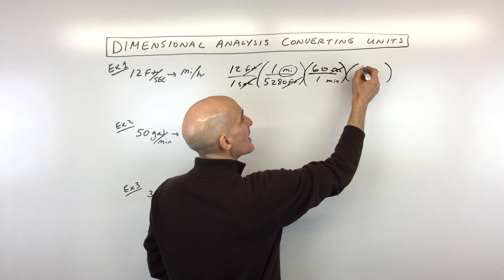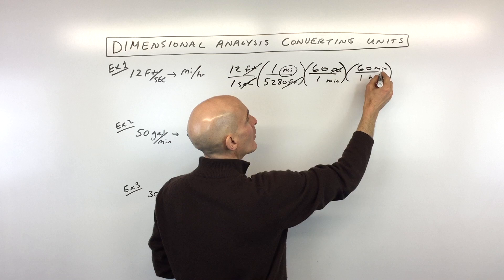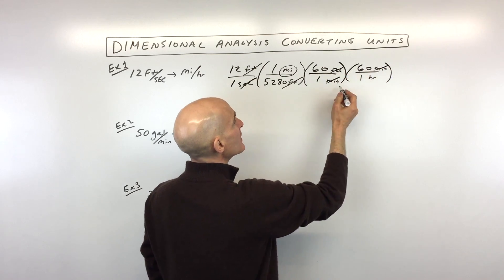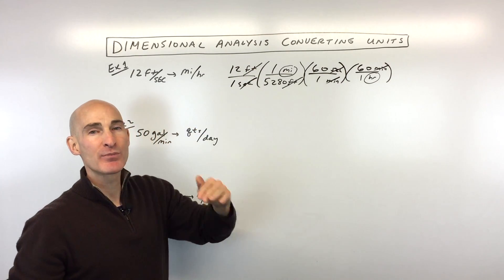So we have to convert those minutes by saying there's 60 minutes in one hour. You can see the minutes cancel numerator and denominator. We're left with miles in the numerator, hours in the denominator - that's miles per hour.